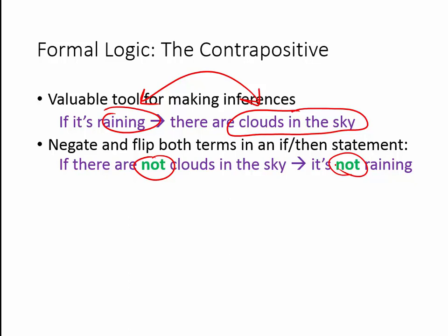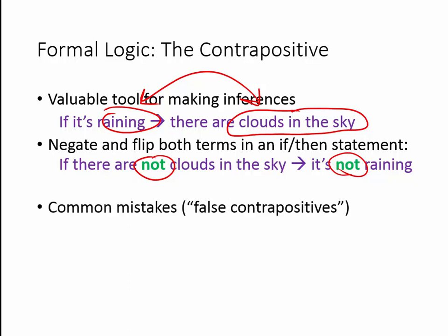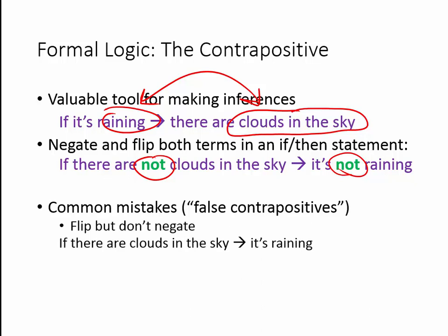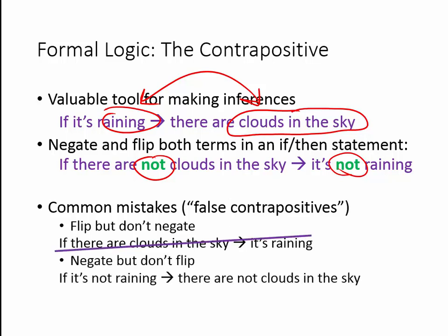With contrapositives, there are a couple of common mistakes to look out for. The first one is to flip the terms but not negate them — that would lead to: if there are clouds in the sky, it's raining. We've already talked about the fact that that's not necessarily true, so that's not a correct contrapositive. Another mistake is to negate the terms but not flip them — to say: if it's not raining, there are not clouds in the sky. If you think about that, you can tell that's not necessarily true either.